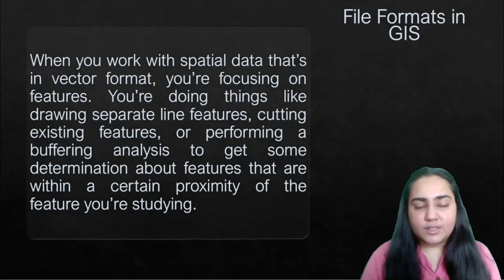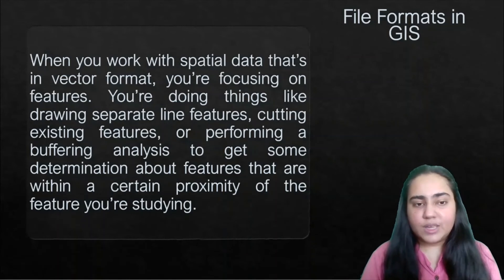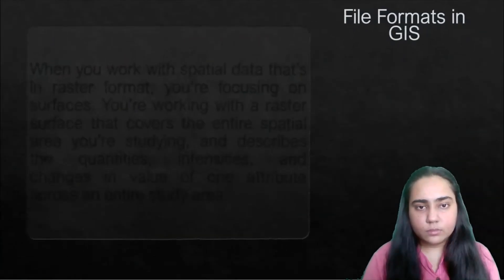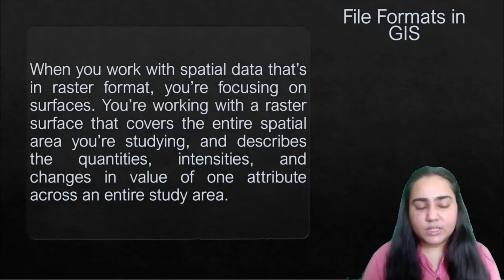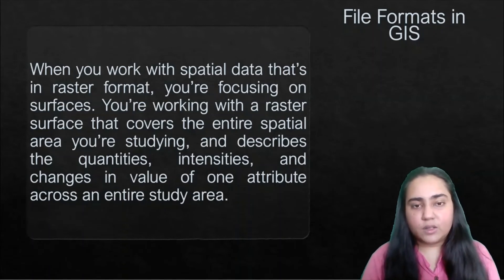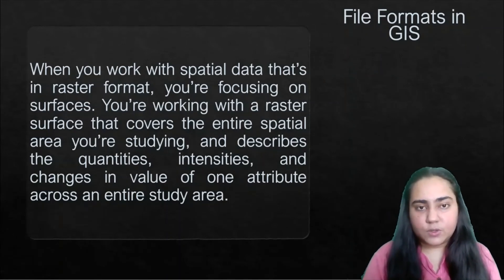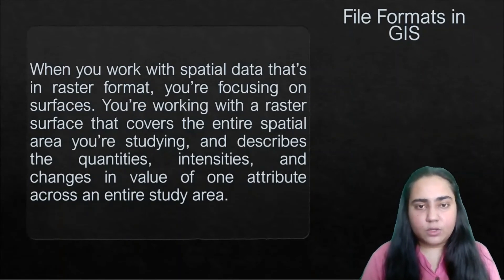When you work with spatial data in vector format, you're focusing on features — drawing separate line features, cutting existing features, or performing buffering analysis to determine what is within a certain proximity of the feature you're studying. When you work with spatial data in raster format, you're focusing on surfaces — working with a raster surface that covers the entire study area and describes the quantities, intensities, and changes in value of one attribute across that area.